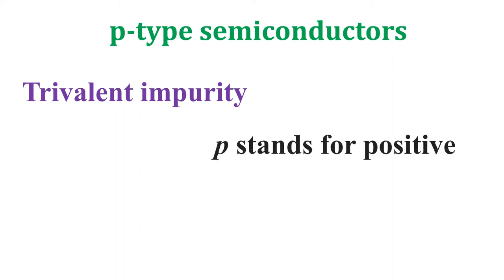Next one is p-type semiconductors. Trivalent impurity, that is the atom which has 3 valence electrons, creates holes in the semiconductor crystal. The pure semiconductors added with trivalent impurities are known as p-type semiconductors.